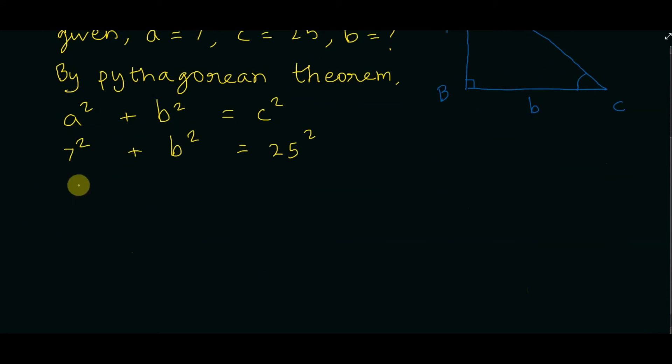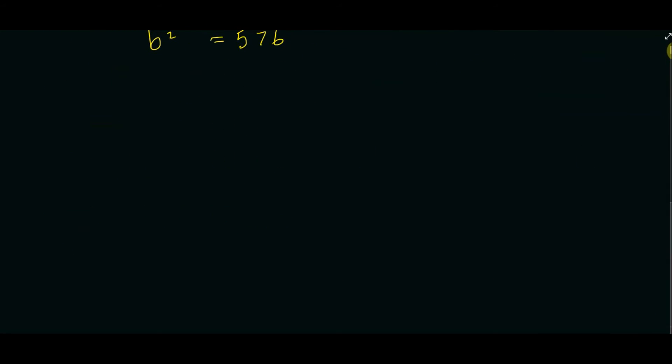Which is 49 + b² = 625. So now subtract 49 from both sides, we get b² = 576. Now take the square root of both sides, we get b = 24.